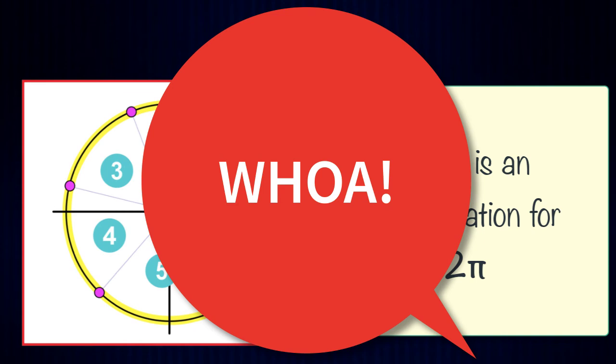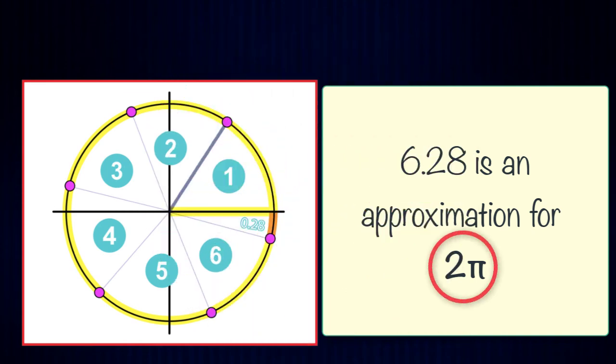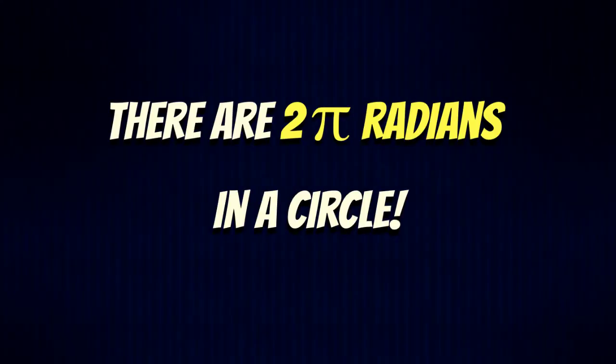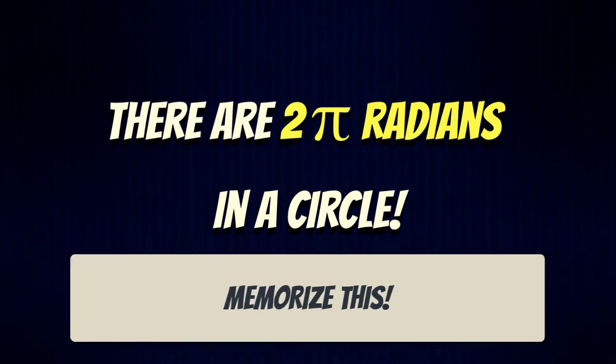And as it turns out, there are exactly two pi radians in a circle. There are two pi radians in a circle, and that's something that you want to memorize and truly understand in order to rock trig.